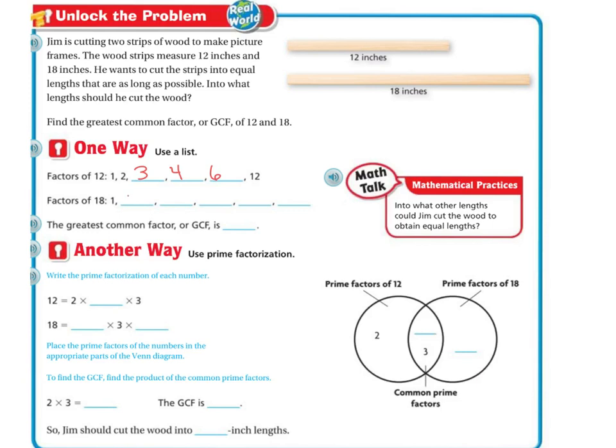When I'm looking at 18, it's 1, 2, 3, 6, 9, and 18. So then I'm just going to circle the ones they have in common. They both have 1, they both have 2, they both have 3, they both have 6. So the biggest number that they have in common, or the greatest common factor, is 6.